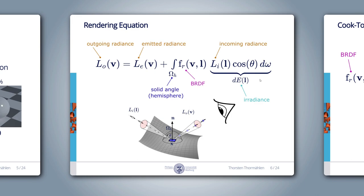The second term is the integral over the complete solid angle of the hemisphere above the surface. We integrate over the contributions from all incoming radiances Li from the hemisphere. Each incoming radiance Li from direction L generates an irradiance contribution dE, which is multiplied by the BRDF — the Bidirectional Reflectance Distribution Function. The BRDF defines how much radiance is emitted in direction v given an irradiance contribution from direction L, describing the material properties of the surface patch. This is where we insert the microfacet BRDF.